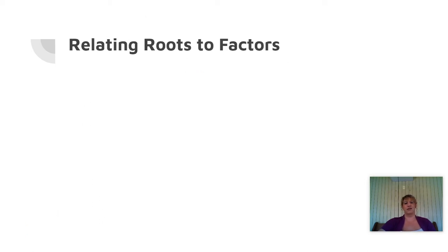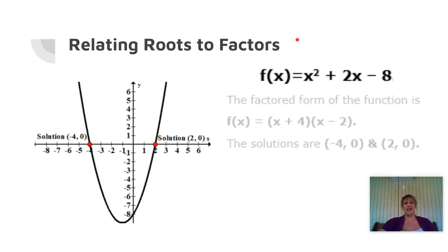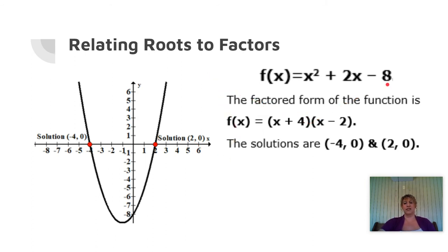Let's go ahead and work on solving that. You're going to notice that our roots, zeros, solutions, and x-intercepts have a relationship to the factors when we factor the quadratic equation — when we factor that trinomial. Using the same function, f of x equals x squared plus 2x minus 8, if we factor that we get the two binomials x plus 4 times x minus 2. Our solutions are negative 4 and 2 — those are the x-values for our x-intercepts. I just want you to take a look at what you notice between the solutions and the factors.